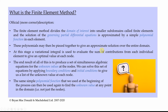Once this approximate solution is available over the entire plate, a variational integral is used to evaluate the sum of contributions from each individual element to give an optimum value at each node. The end result is a set of simultaneous algebraic equations for the unknown values at the nodes, which we solve by applying boundary conditions and initial conditions to give us a list of the unknown value at each node.